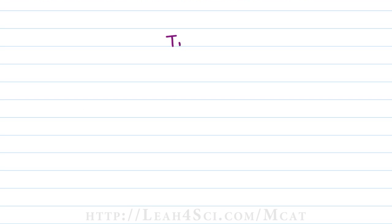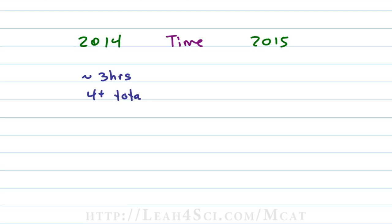The last and most crucial difference between the 2014 and 2015 exams is the time spent taking the exam and at the test center. The old exam had sections ranging from 60 to 70 minutes, totaling about 3 hours of testing time and 4-plus hours of total seat time including breaks. The new exam, with four sections and additional time per section, is much longer — just over 6 hours of actual exam time and about 7.5 hours of total seat time.